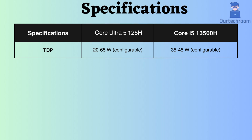The TDP of both processors is configurable, but the Core Ultra can achieve a much lower wattage compared to the Core i5-13500H. It's worth noting that these TDP values are not officially disclosed by the manufacturer's website, but information gathered from various sources suggests that the Ultra 5 might have a slightly lower TDP compared to the i5-13500H due to its use of a 7nm manufacturing process, potentially leading to better efficiency.